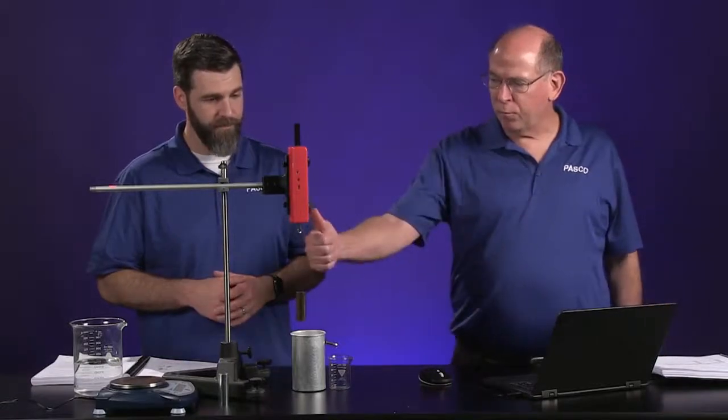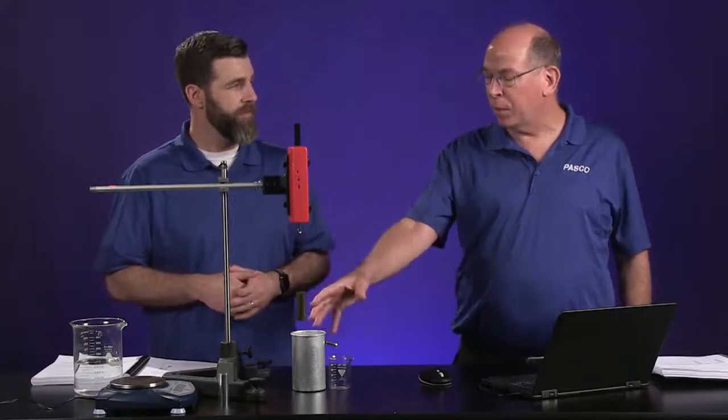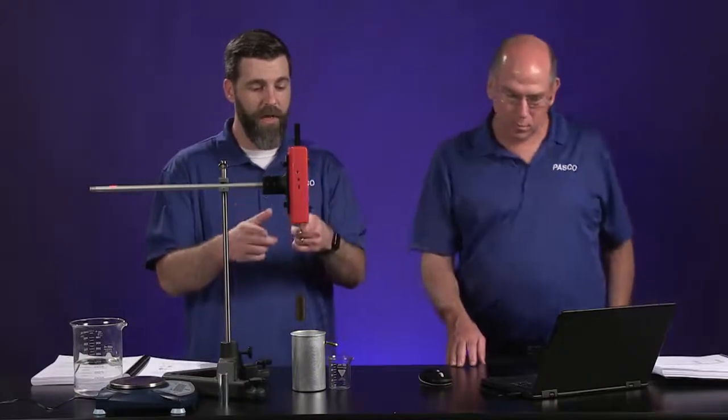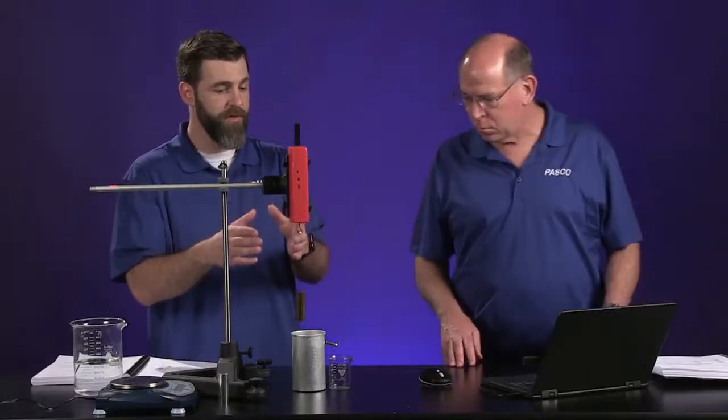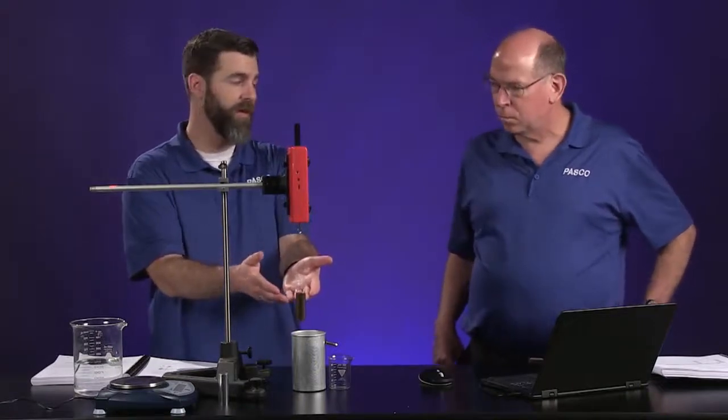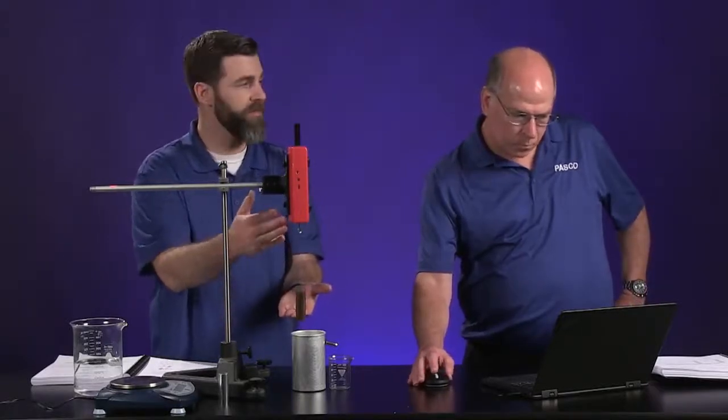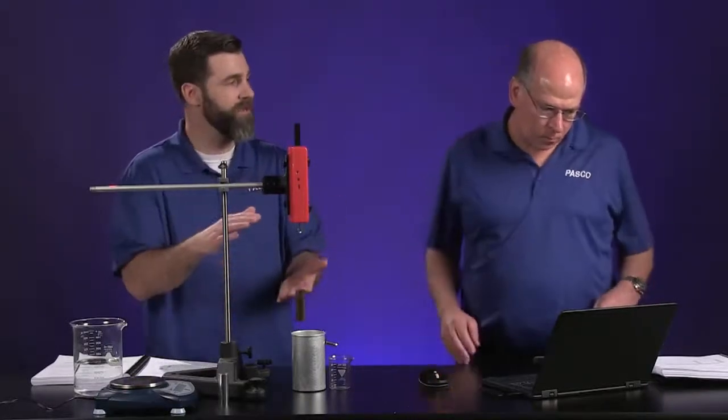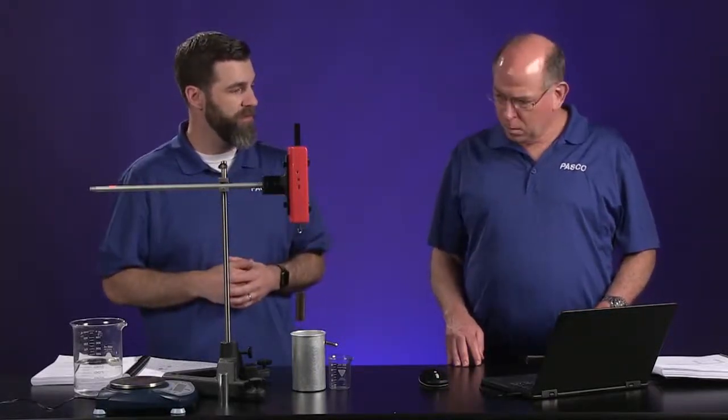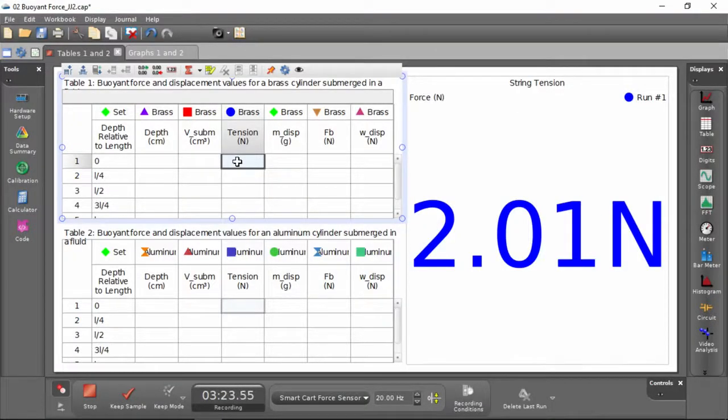So the upward force of tension, you're saying, is going to go down as we submerge it and the amount it goes down is the buoyant force? That's right. Right now the force sensor is measuring the tension, and that tension is due to the weight of this brass cylinder. As we submerge it, the measurement that the sensor is making, the tension, is going to change. Well, we suspect it will change, and that change will be that buoyant force.